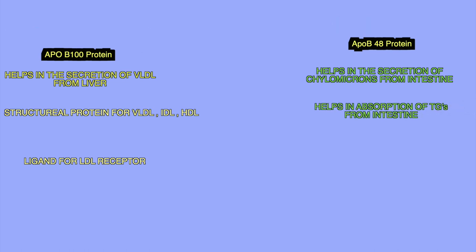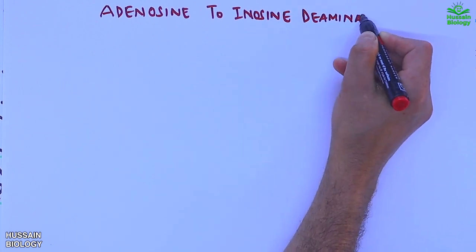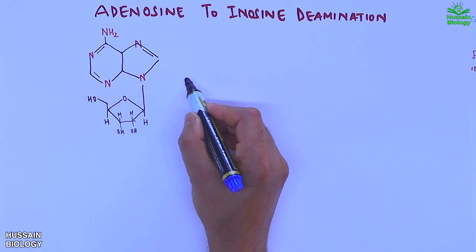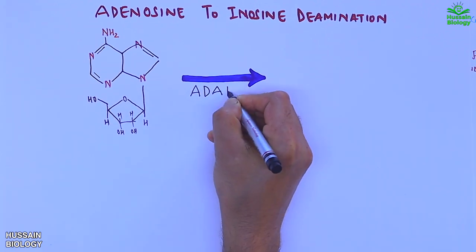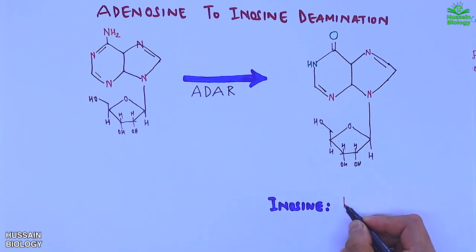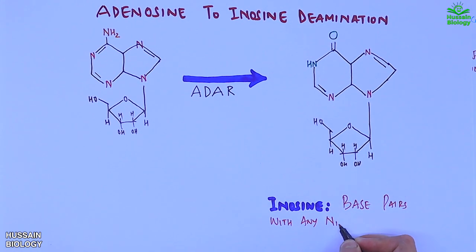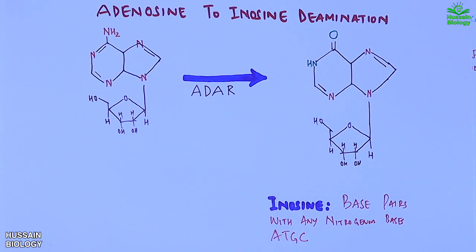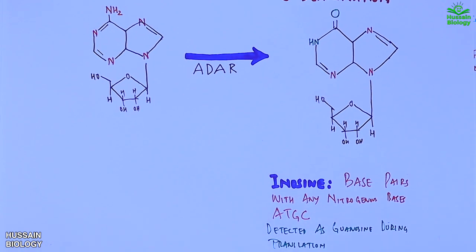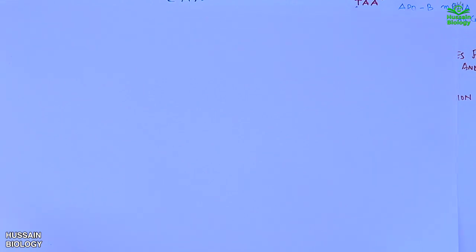Now let's see the mechanism of adenosine to inosine deamination process. We know adenosine in the RNA is acted upon by ADAR enzyme and gets converted into inosine. And this inosine base pairs with any nitrogenous bases. It may be A, T or G or C. And it's detected as guanosine during translation process. Now moving on to the mechanism.